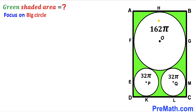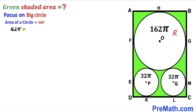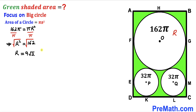Let's focus on the big circle with radius uppercase R. Using the area formula, area = πR², and given the area is 162π, we write 162π = πR². Dividing both sides by π gives R² = 162. Taking the square root on both sides, R = 9√2 units. So the radius of the big circle is 9√2.